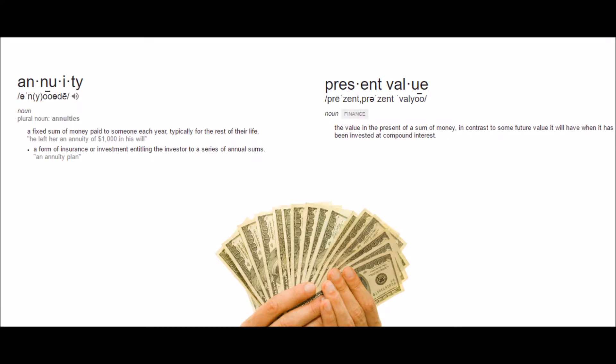Annuity: a fixed sum of money paid to someone each year, typically for the rest of their life. Also, a form of insurance or investment entitling the investor to a series of annual sums. Present value: the value in the present of a sum of money, in contrast to the sum future value will have when it has been invested at compound interest.